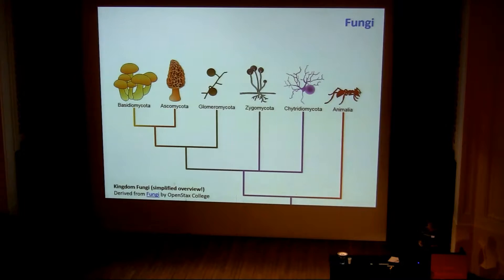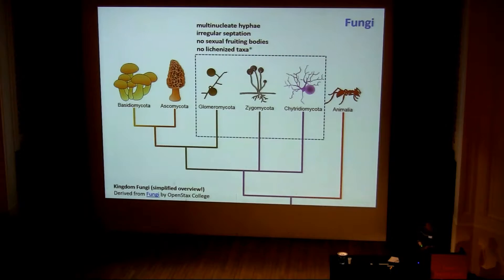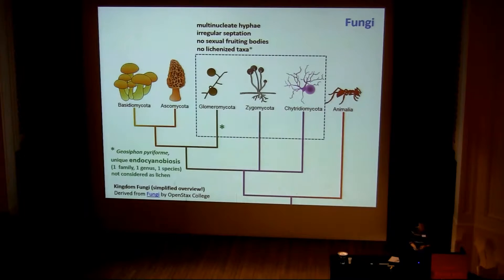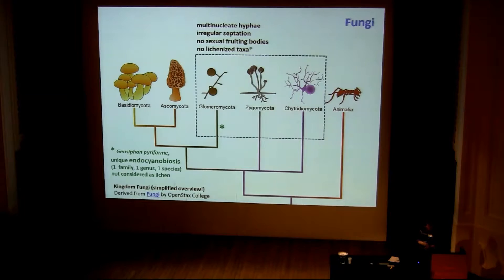Which fungal groups contain lichenized members? We have the fungi with no sexual fruiting bodies — the chytridiomycetes, zygomycetes, and glomeromycetes — in a simplified overview. The glomeromycetes may be known to you; it's the group of our vascular mycorrhizal fungi. There is one very interesting exception: Geosiphon pyriforme — one family, one genus, one species. We do not know if this is the last of its kind or the first. It is not considered a lichen because this fungus lives in loamy soil.